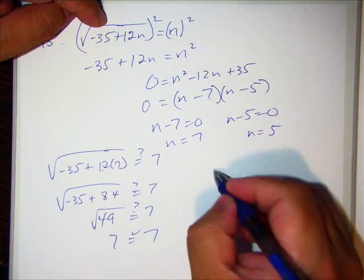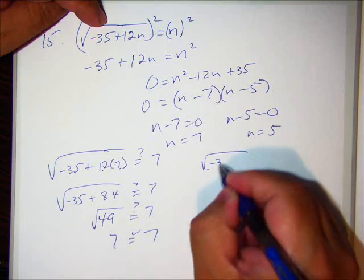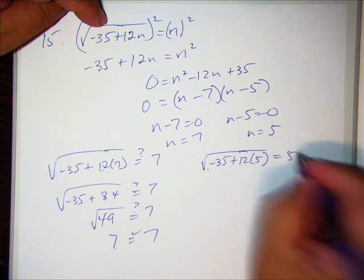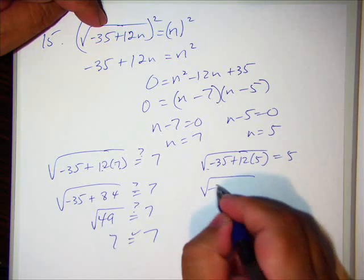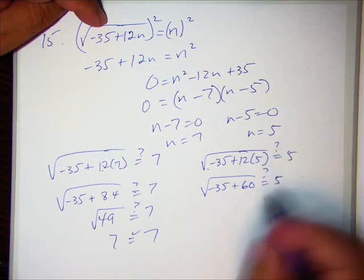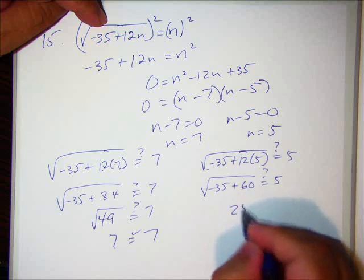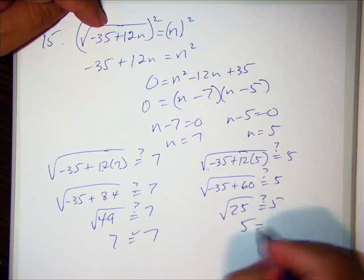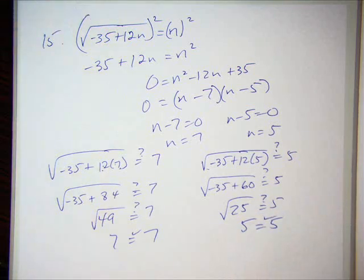Plug it into 5. See if that works. √(-35 + 12 times 5). Does that equal 5? That's 60. Uh-huh. 25. Square root of 25. What do you think? Yep. It works.